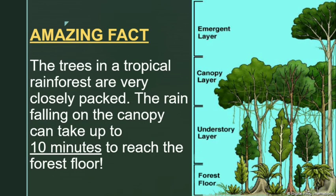Now, one amazing fact for you as always — the trees in a tropical rainforest are very closely packed. The rain falling on the canopy can take up to 10 minutes to reach the forest floor. Isn't it very fascinating?